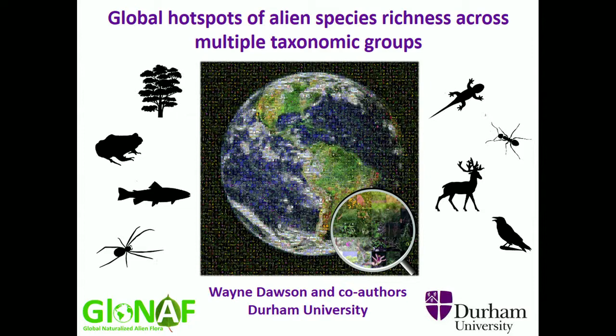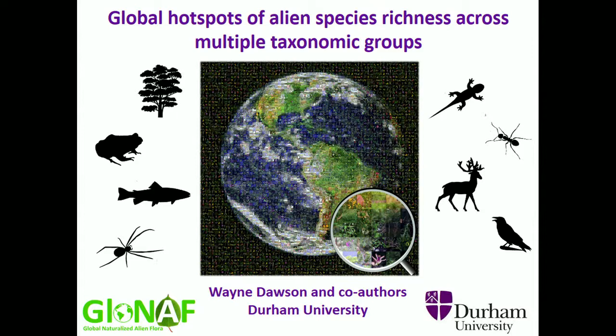I'm going to talk about alien species at the global scale — global species richness patterns of aliens. Alien species, or biotic exchange of species around the world, is recognised as a signature of the Anthropocene.